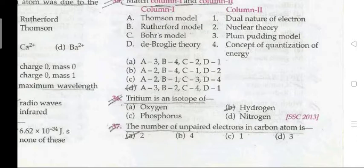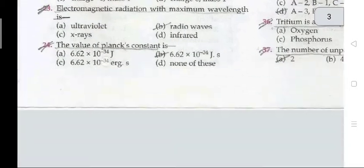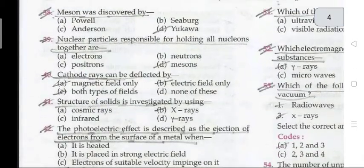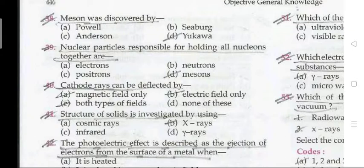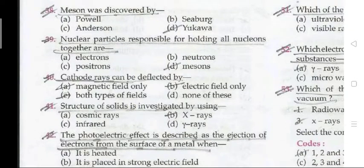Question 38: the number of unpaired electrons in a carbon atom is 2. Question 39: meson was discovered by Yukawa. Question 39: nuclear particles responsible for holding all nucleons together in the nucleus are mesons.